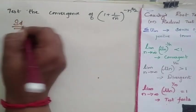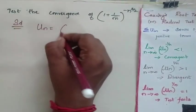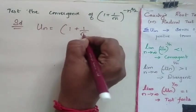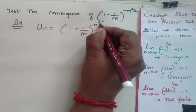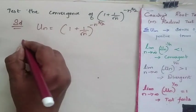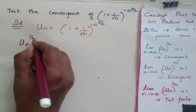So now when you go for the solution, your u_n is equal to (1 + 1/√n)^(-n^(3/2)). So I am going to find u_n to the power 1/n.